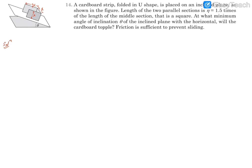We have a 3D picture which we can convert into a 2D picture. The inclined plane makes angle theta with the horizontal surface. Looking from the side, the rectangular face will appear, with height L and length eta times L.